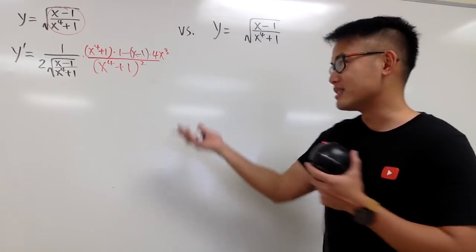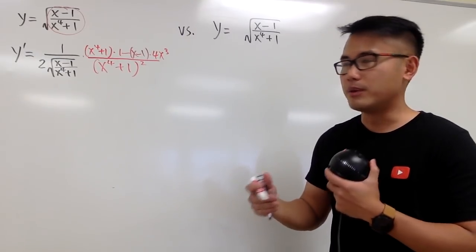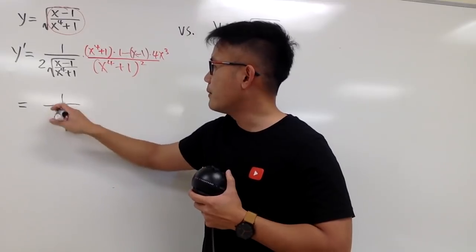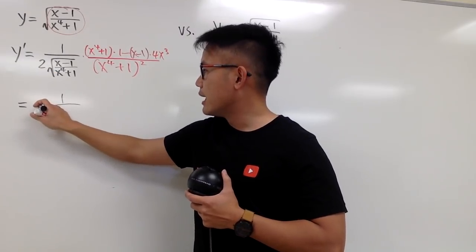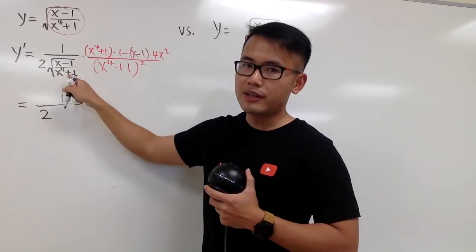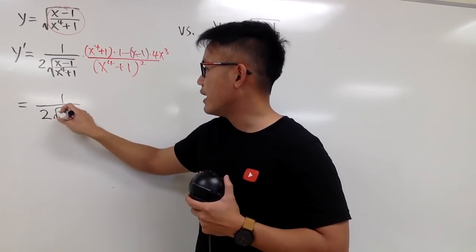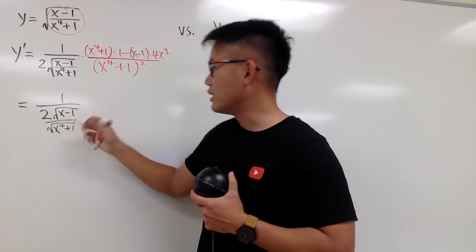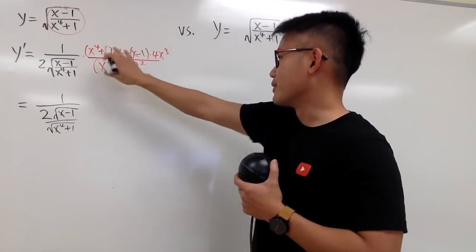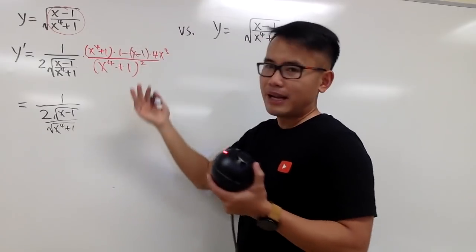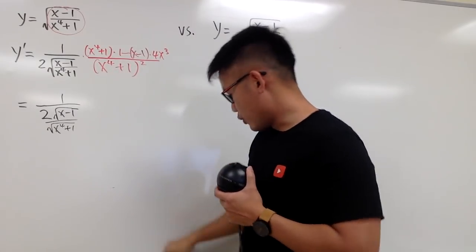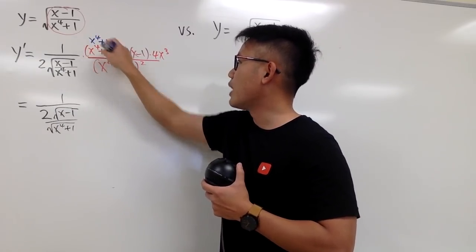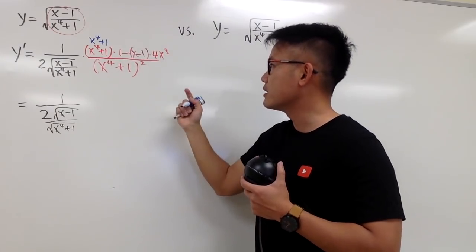And this right here is pretty much it as far as the calculus step goes, and the rest is just pretty much algebra. Now we will see — for the first part, let me write it down as 1 over, and I will put the 2 like this, and the square root of the top and bottom — we can write this down as square root of x minus 1, and then over another square root of x to the fourth power plus 1, like that. And then for the red part, we will just multiply all the things on the top and then combine like terms, so we see that this times 1 is just x to the fourth power plus 1.